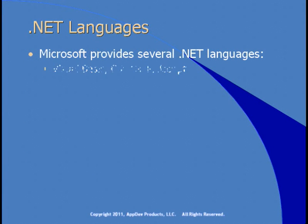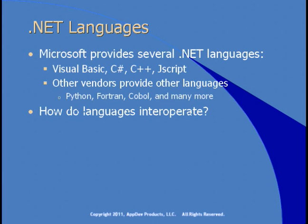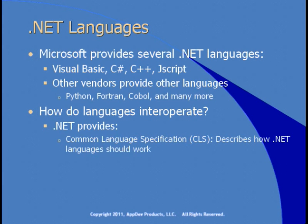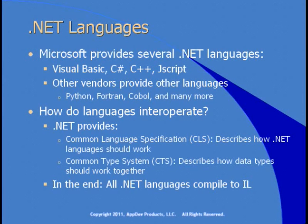Microsoft provides several .NET languages including Visual Basic, C#, C++, and JScript. Other vendors provide languages like Python, Fortran, and COBOL. How do these languages interoperate? .NET provides the Common Language Specification, which describes how a .NET language should work. In addition, the Common Type System — CTS — describes how data types should work together, so code using a string in one language can interoperate with code using a string in another language. In the end, all .NET languages compile to IL.